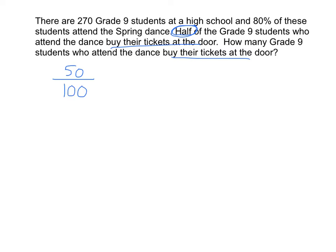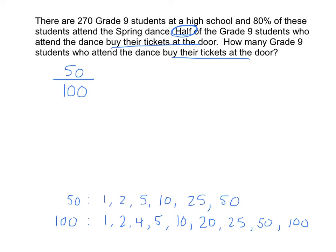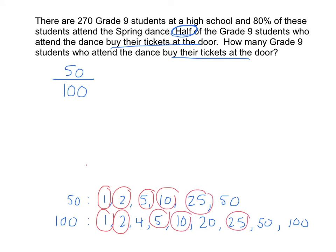Can you put this fraction into lowest terms? What are 50 and 100 both divisible by? Let's write the factors of 50 and 100. We already know the factors of 100, so let's rewrite those, and now let's figure out the factors of 50. Let's circle all the common factors: 1, 2, 5, 10, 25, and 50. The greatest common factor is 50. That means 50 is divisible by 50 and 100 is also divisible by 50. 50 divided by 50 is 1, and 100 divided by 50 is 2. So 50 over 100 is equal to 1 over 2.